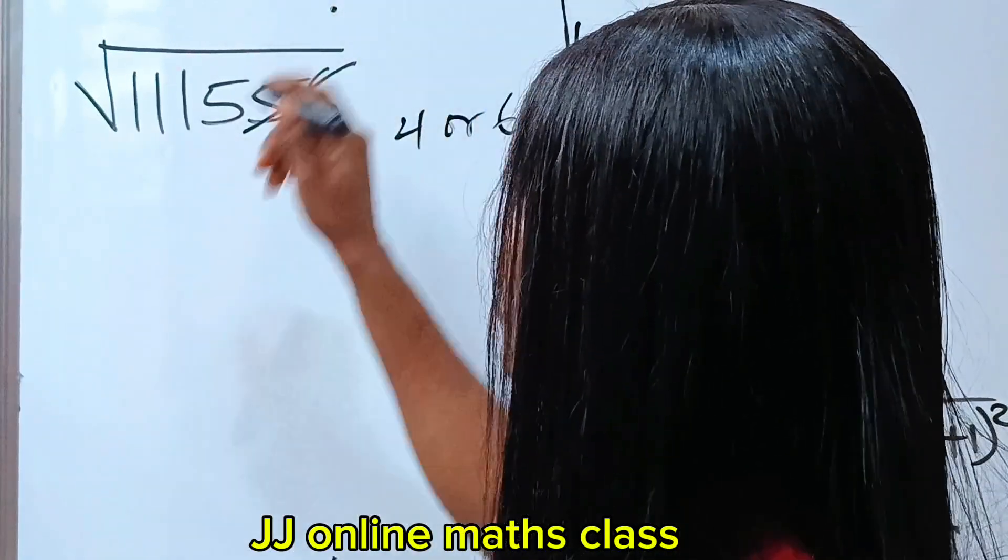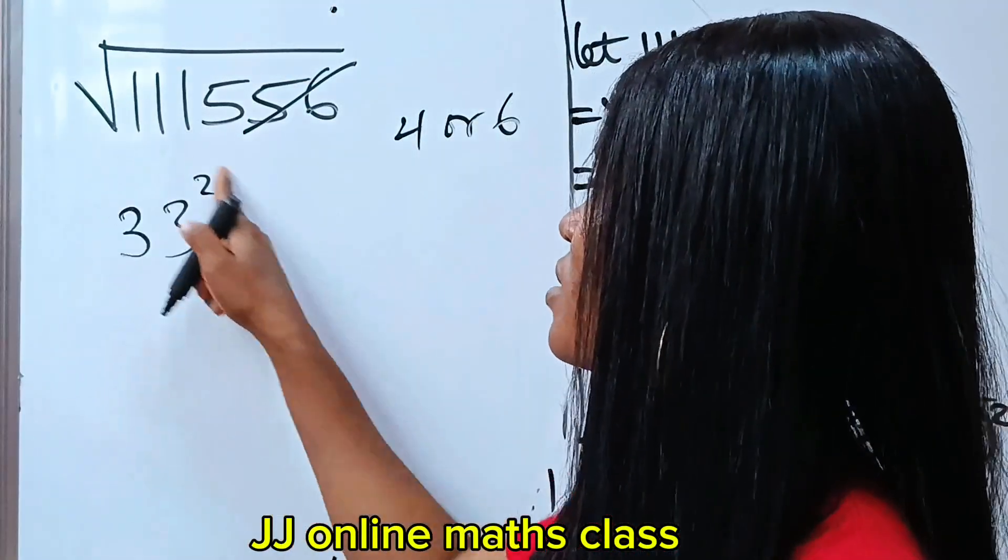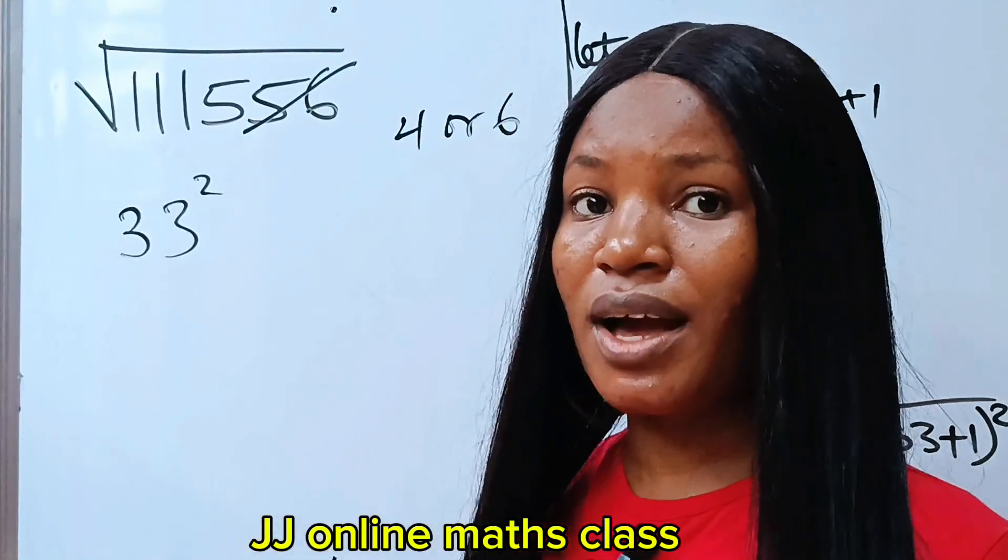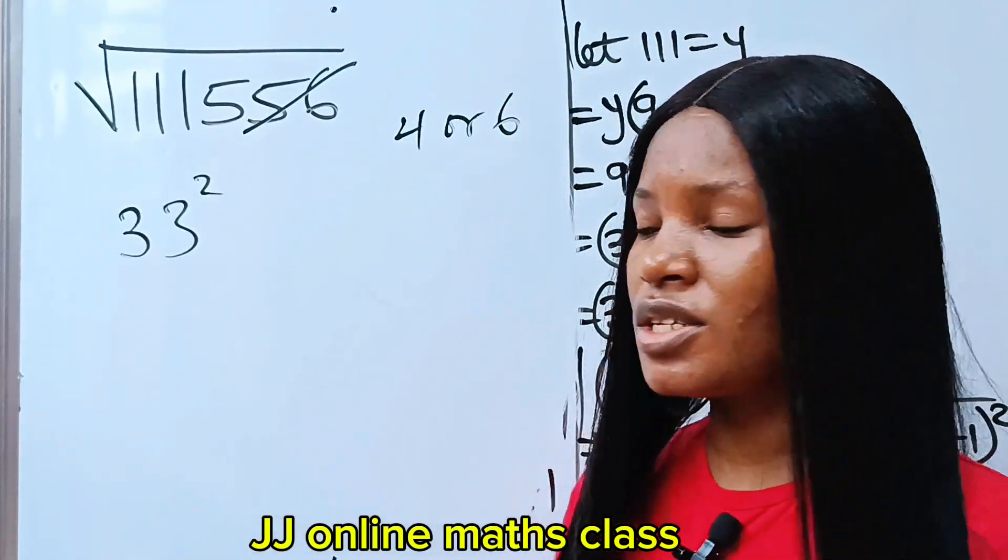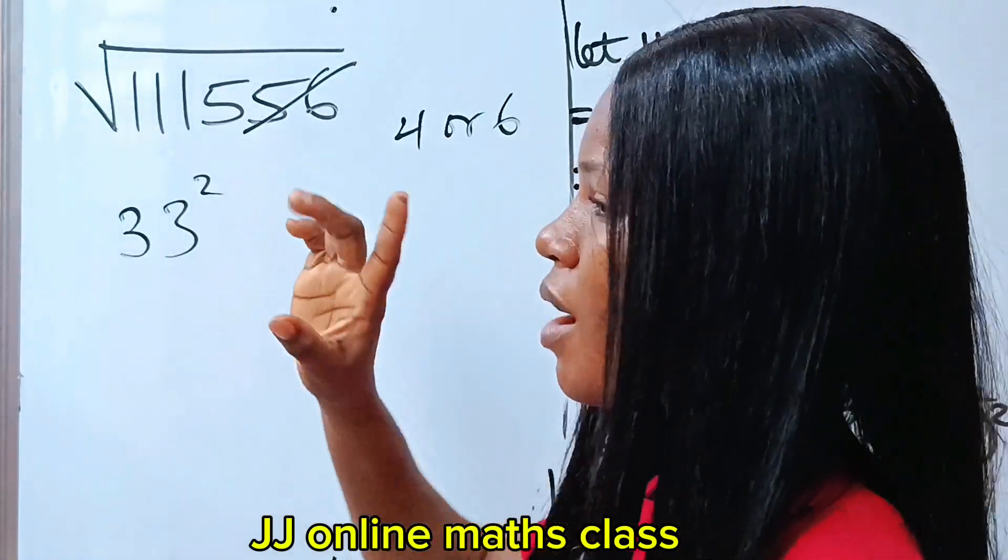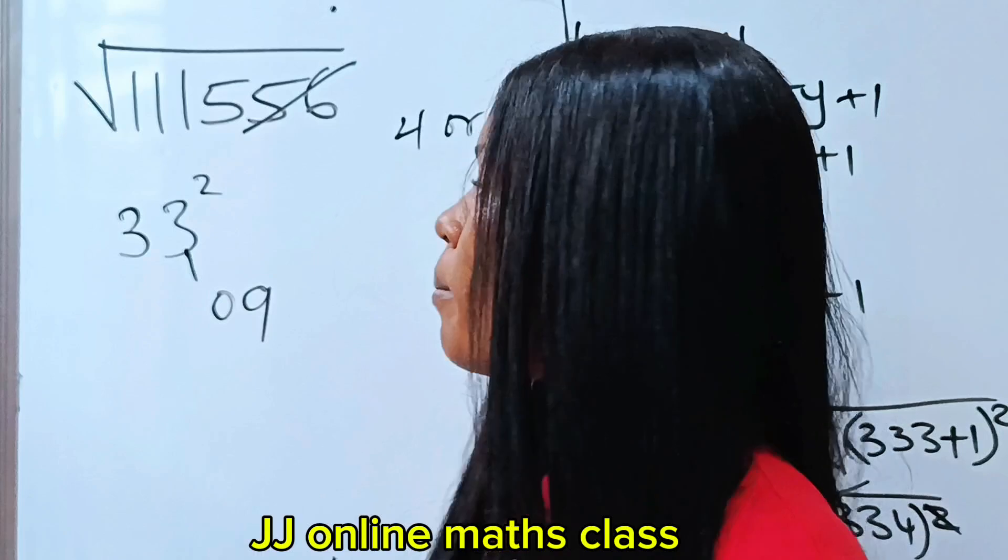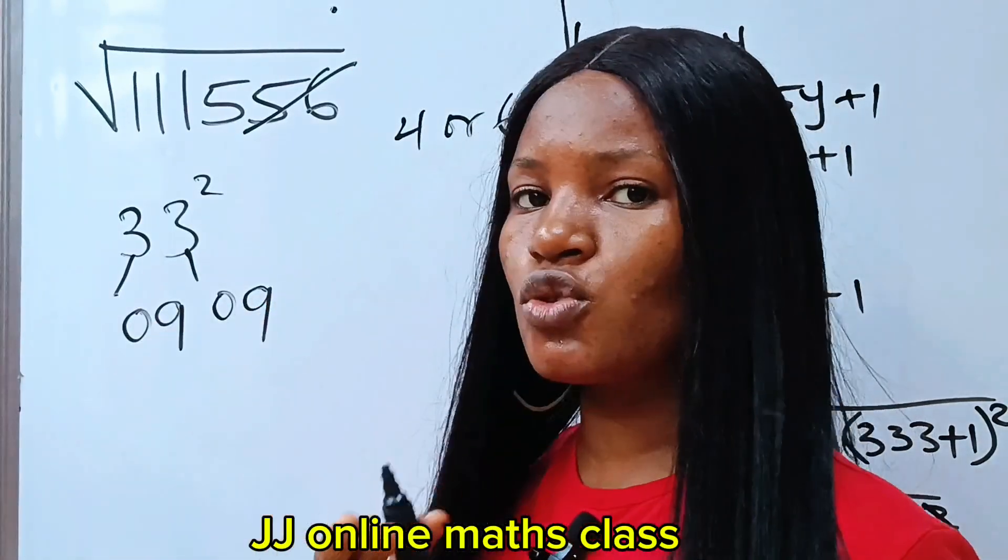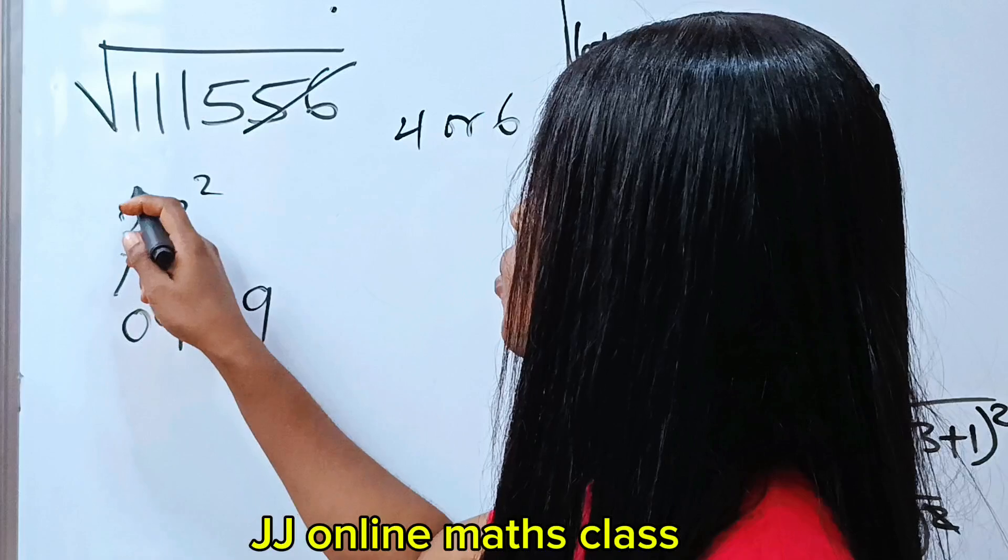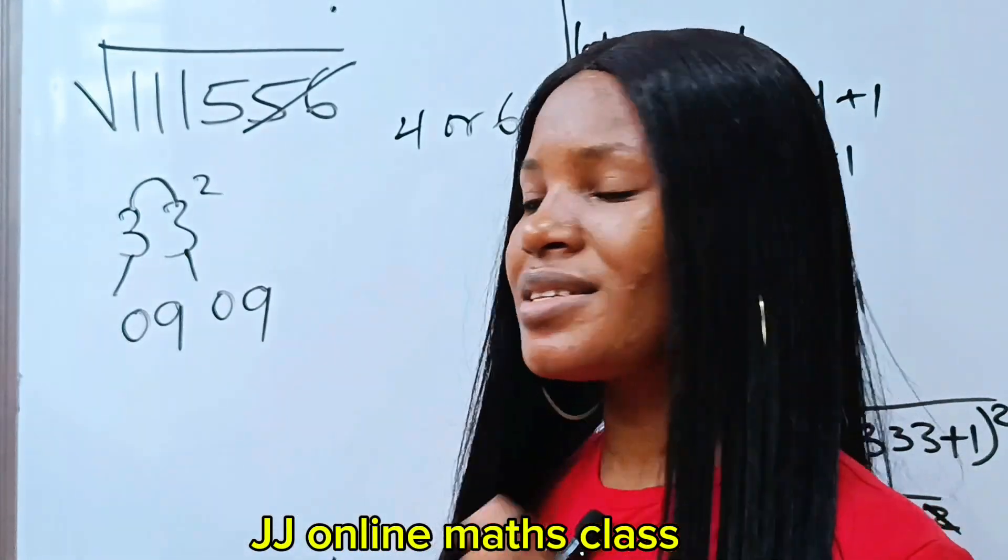But, if you check 33 squared, 33 squared will give us what? If you solve this, you are going to get... Let me use another trick and get the 33 squared. All these tricks are in this channel. Now, to get the 33 squared, I am going to use this trick. 3 squared is 9. I am going to write it in 2-digit number. Now, this 3 squared is 9 again. I am going to write it as a 2-digit number. Then, I am going to multiply 3 by 3 to give me 9. And, double of 9 is 18.